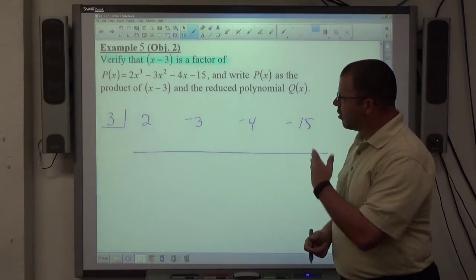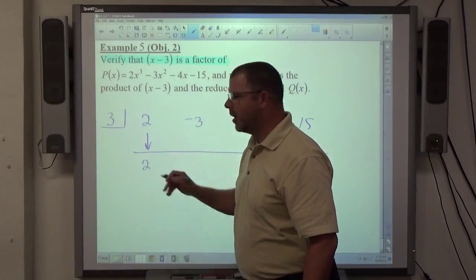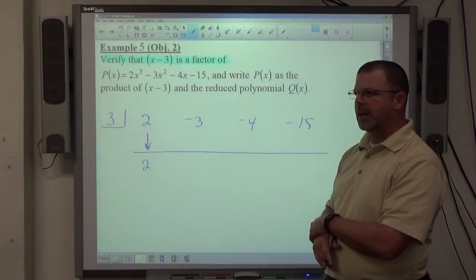The highest power term, 2x³, whatever this number is, gets to move straight down. And at that point, we simply multiply that to get the remaining numbers.